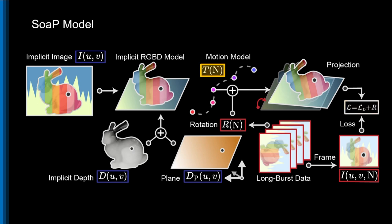As our model is fully differentiable, we can back-propagate this loss through its motion, image, and depth components, jointly optimizing all three.